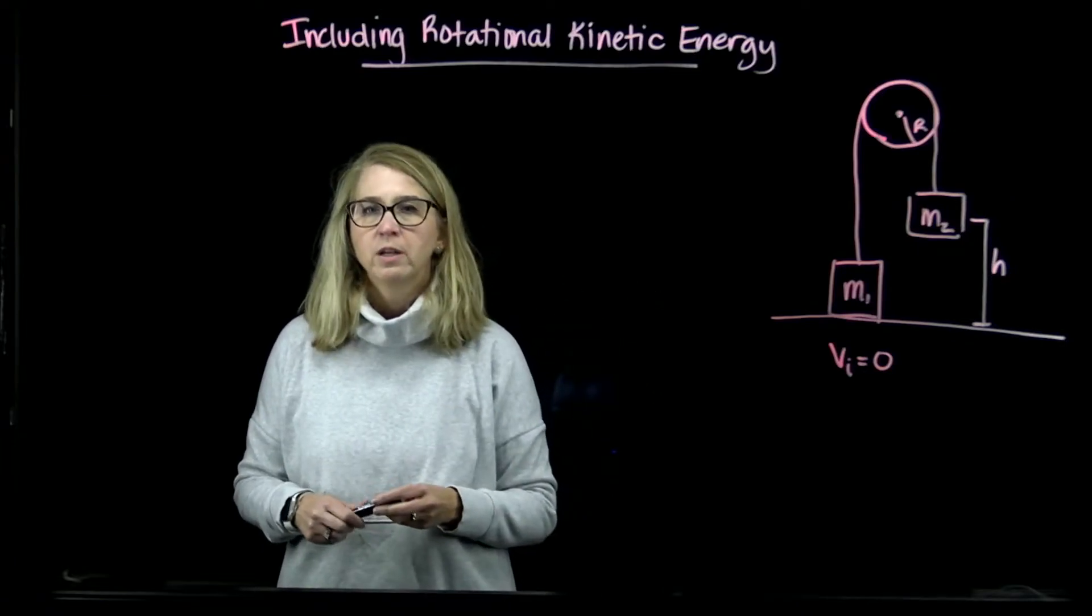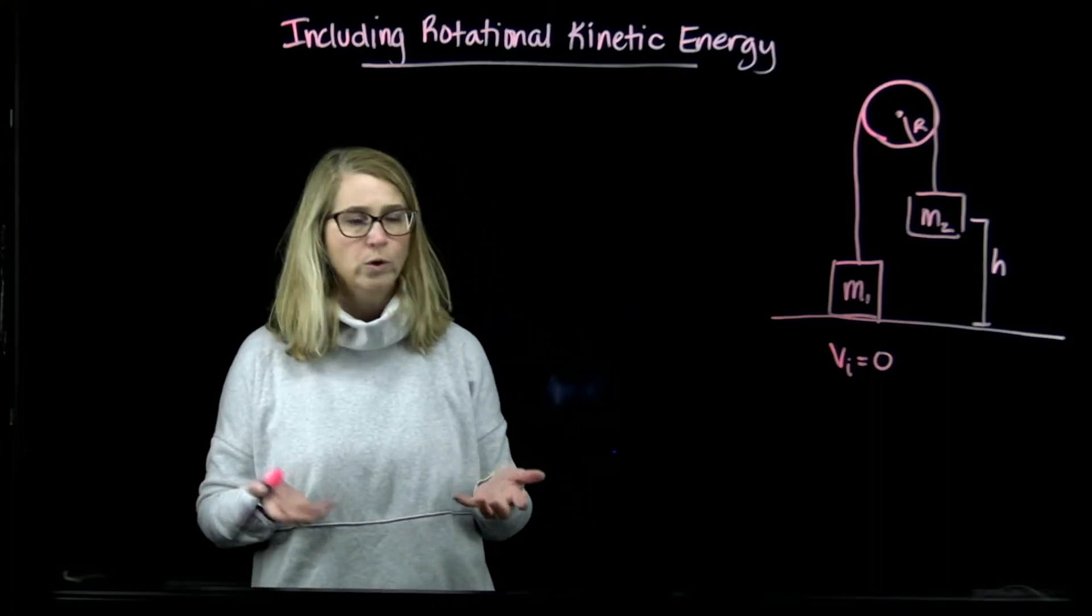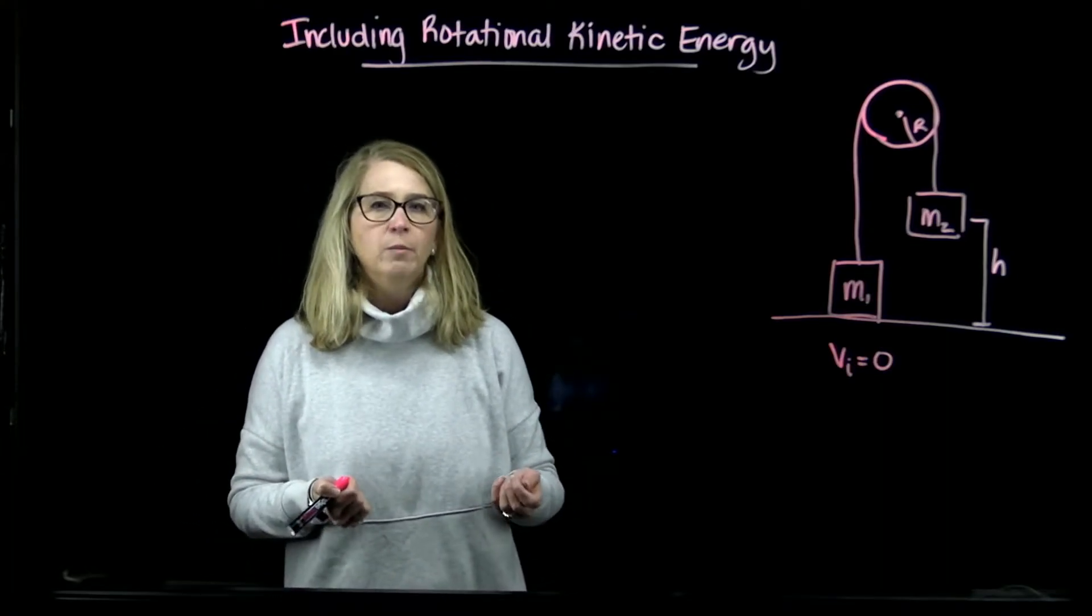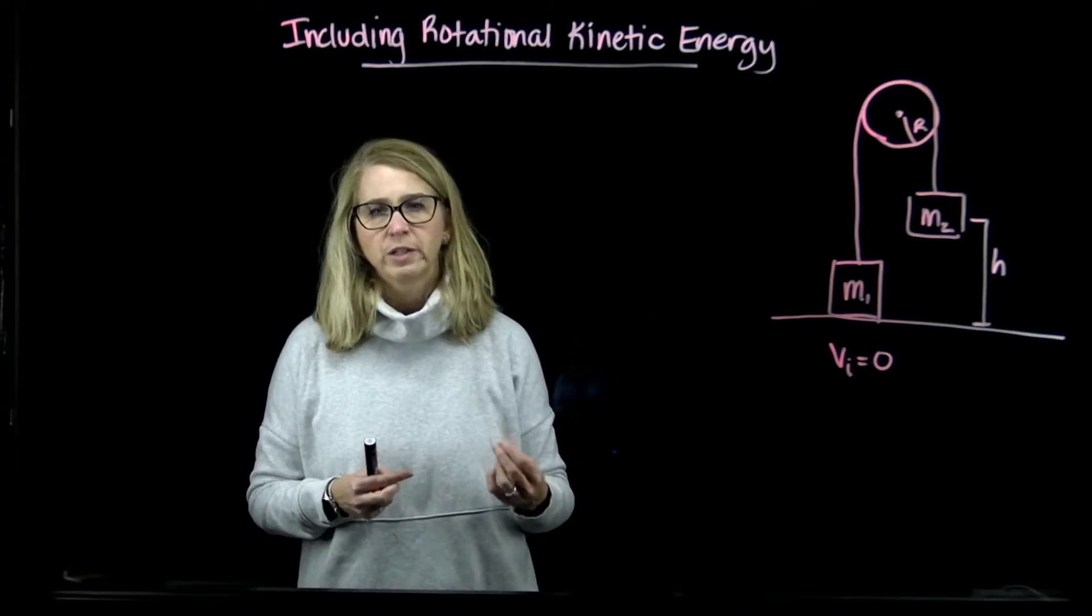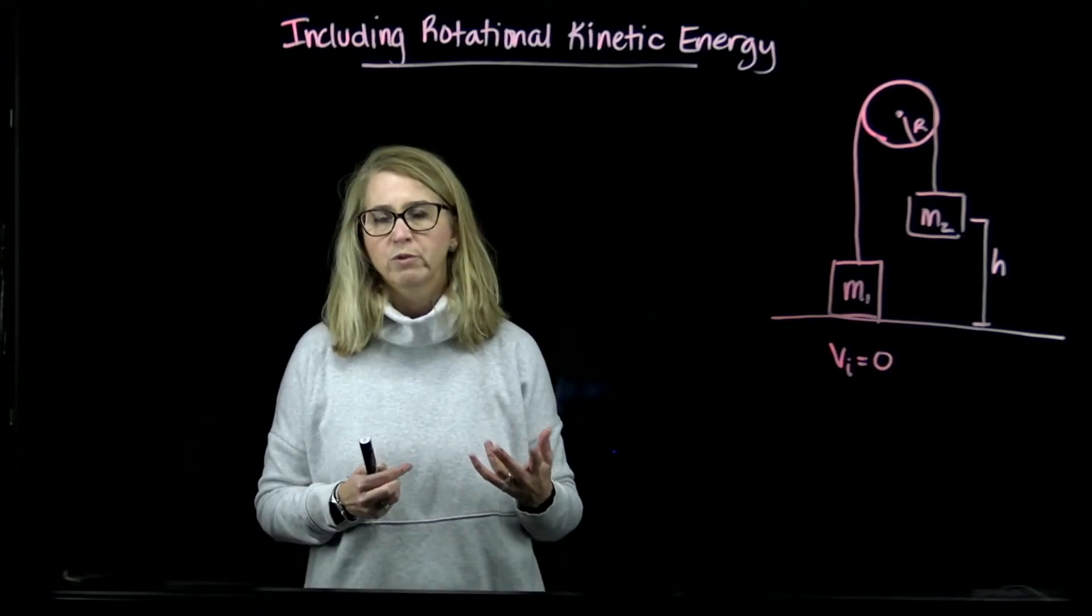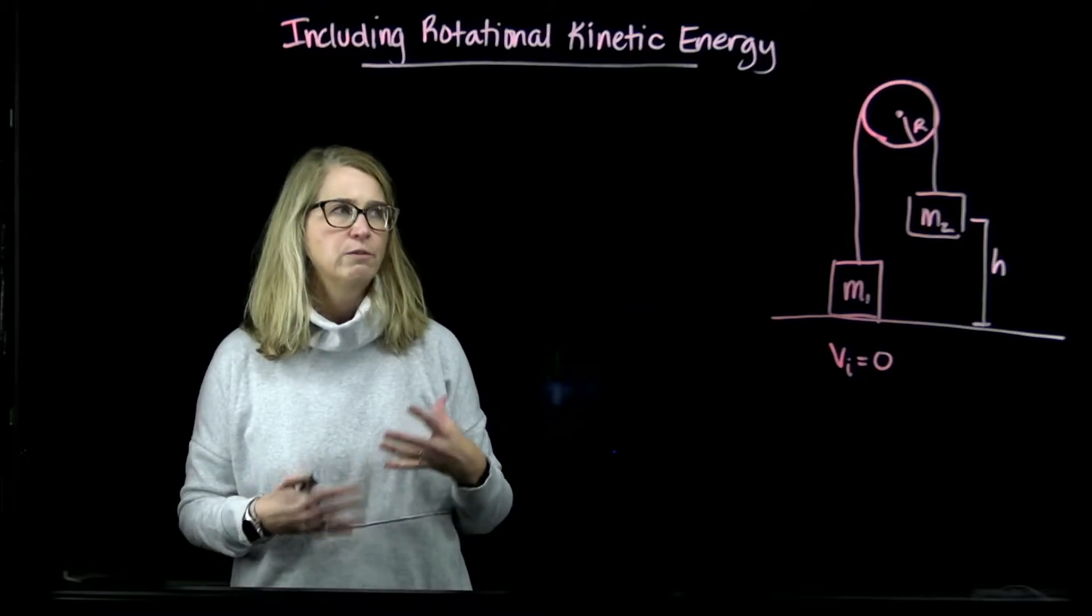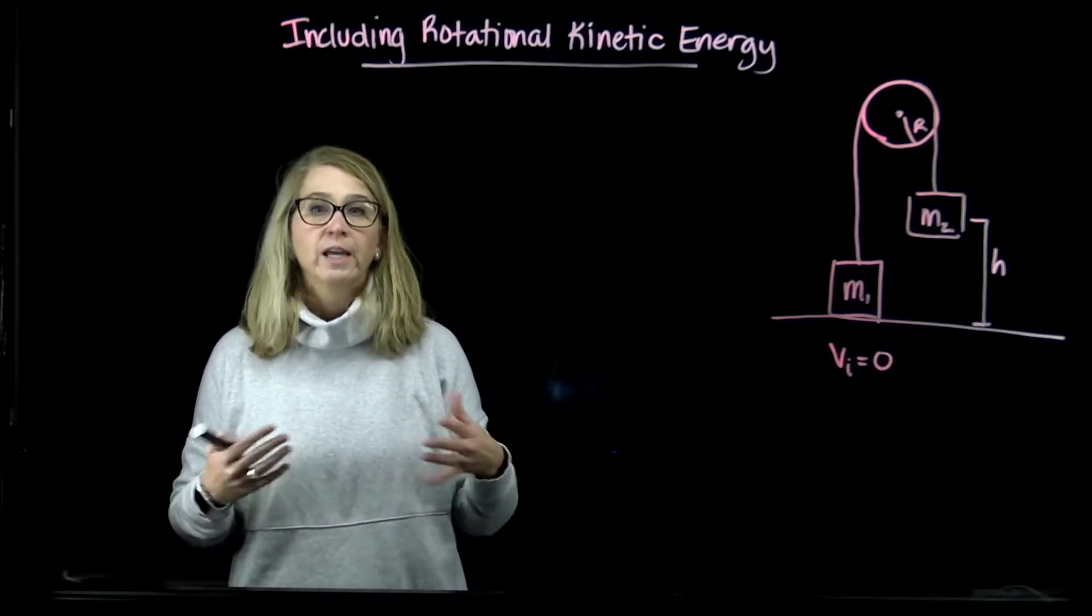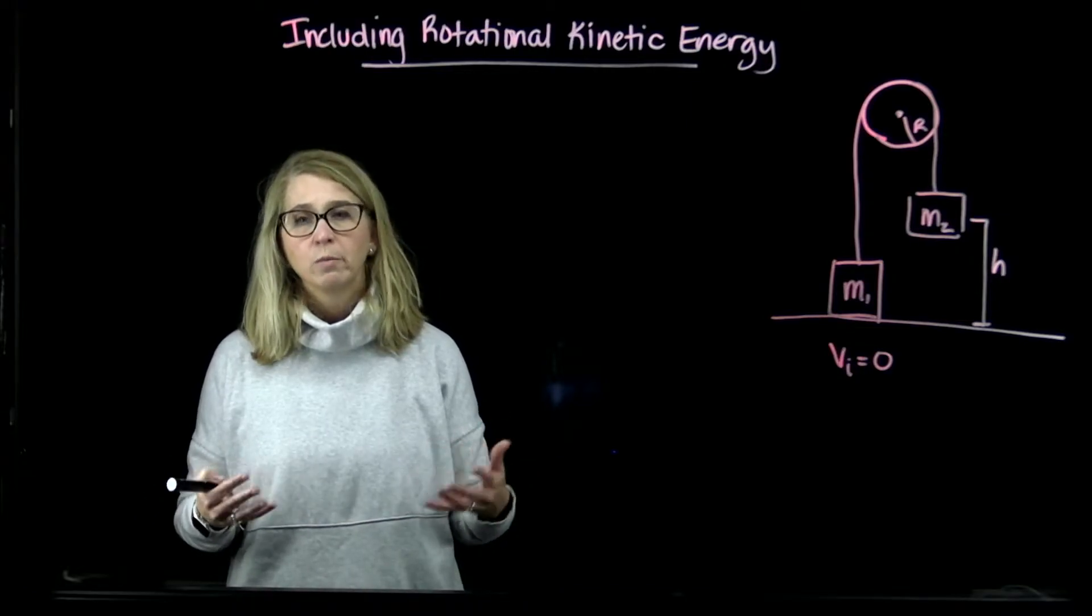We have the Atwood machine, which is two masses connected by a cord hanging over a pulley. When we first were introduced to this scenario, we always stressed the fact that the pulley was frictionless, which means we weren't really speaking about the resistance of the pulley to rotation. If you think about that, that means we really weren't thinking about its moment of inertia.